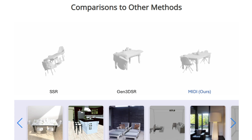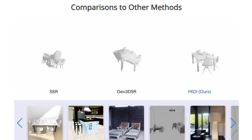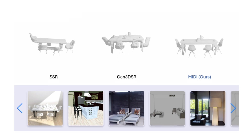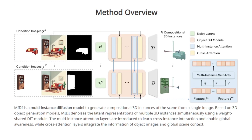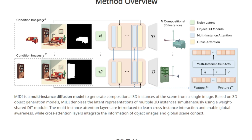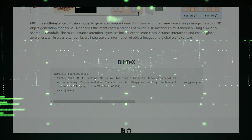The outcomes are impressive. MIDI can transform a variety of images into detailed 3D scenes, whether everyday photos or artistic creations generated by text-to-image AI. This development represents a significant advancement in 3D scene generation, offering a quicker, more effective, and visually superior method for converting single images into expansive 3D environments.